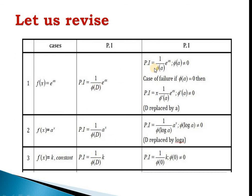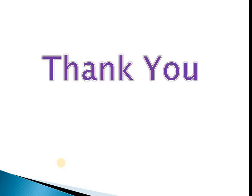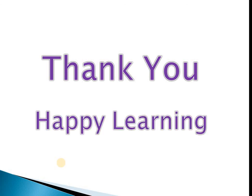In summary, we use this shortcut method when f(x) is e^(ax) — replace D by a; if RHS is a^x — replace D by log a; if RHS is constant k — take k outside and replace D by 0. If phi(a) = 0 (case of failure), use x/phi'(a) · e^(ax) and continue differentiating as needed. I hope you understand this. Thank you for watching this video. Subscribe to my channel to watch more videos on this topic. Thank you, happy learning.